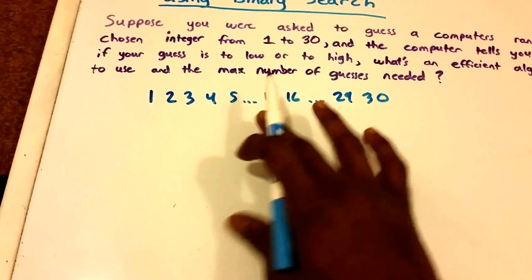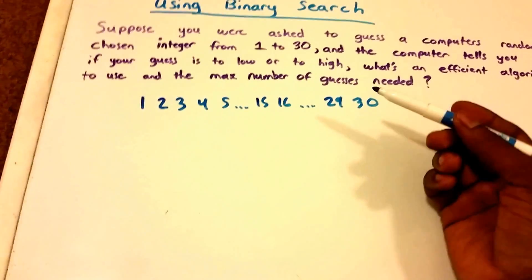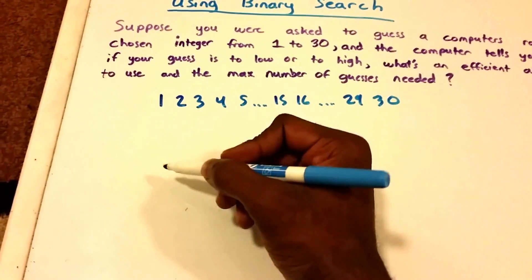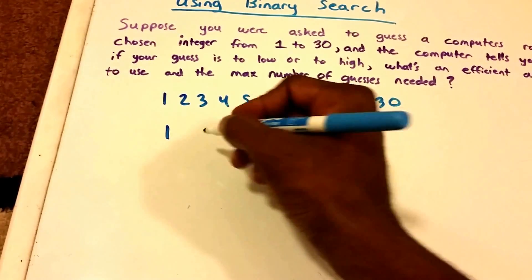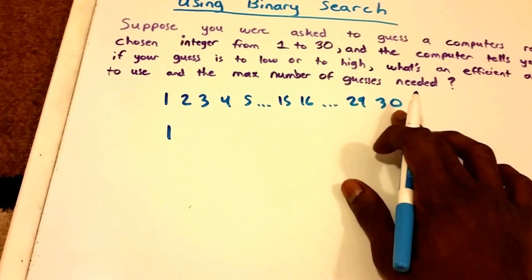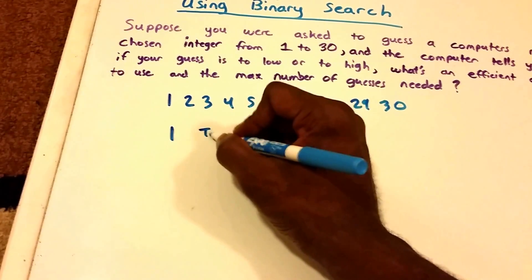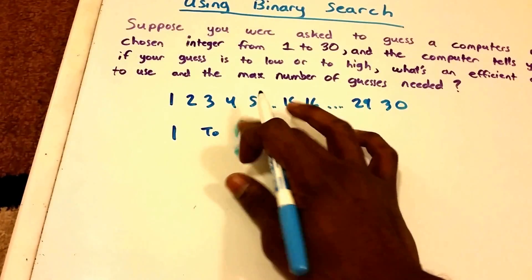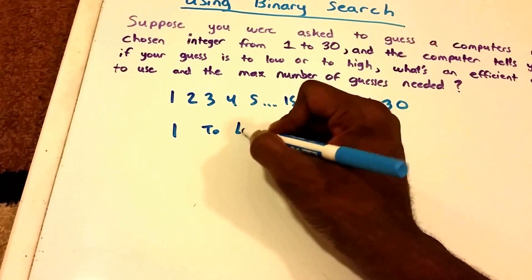The dots just stand for all of the integers in between. Then we might come up with some algorithm where we'll choose the first one here. We'll say 1. We'll say is the number 1 that the computer guessed, and maybe the computer chose the number 30. So it would say no, too high. I'm sorry, not too high, it'll say too low.